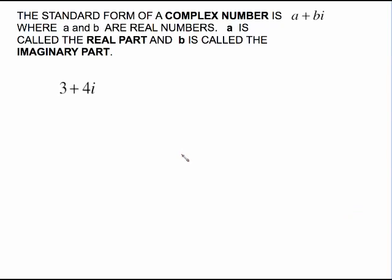Now, to actually get to the definition of a complex number, a complex number is a number that's in the form of a + bi, where a and b are real numbers. a is called the real part, and b is called the imaginary part. So for this complex number, this is my real part. This is my imaginary part, because it's the part that's got the i in it.